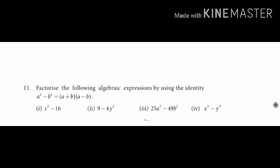11th sum: Factorize the following algebraic expressions by using the identity a squared minus b squared is equal to a plus b into a minus b. This formula is used to solve these sums.